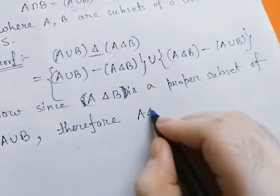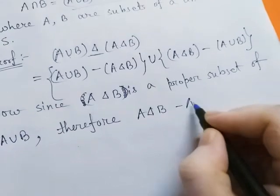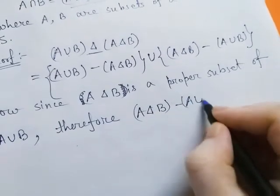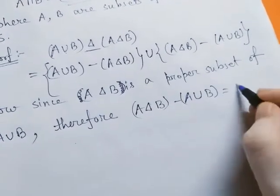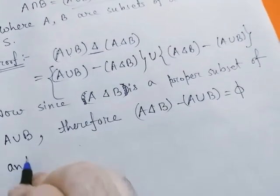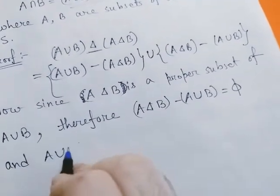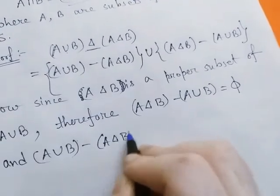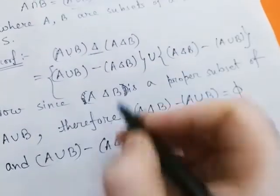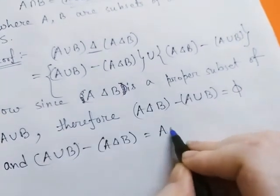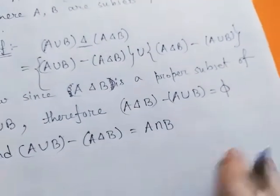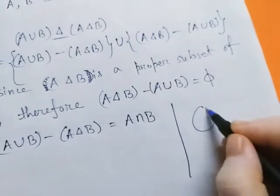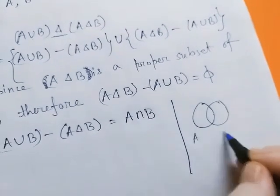A delta B minus A union B equals phi, and A union B minus A intersect A delta B equals A union B minus A delta B, which equals simply A intersection B.